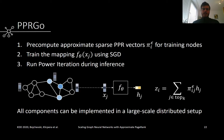To summarize, first we pre-compute the sparse personalized page rank vectors with ACL's algorithm only for the training nodes. Then, we use these to train the function f, mapping features to logits. Finally, during inference, we run a variant of power iteration to obtain the predictions for all nodes. Importantly, all of these components can be implemented in a large-scale distributed setup.